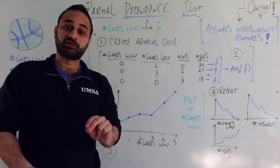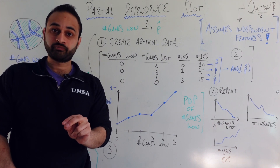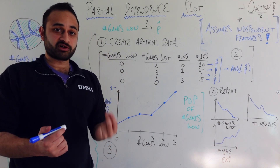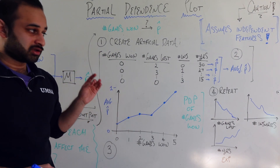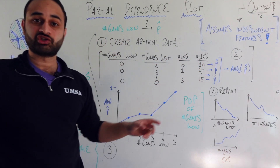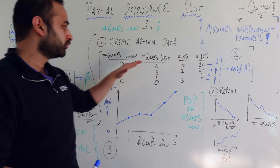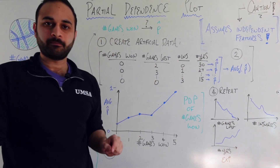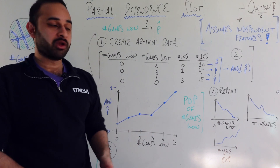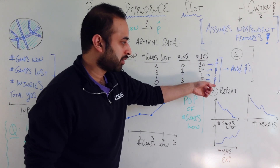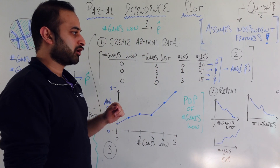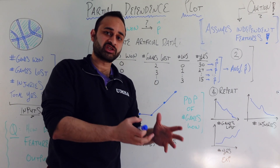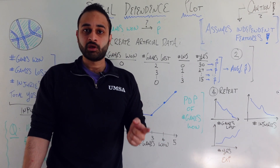Let's say the number of games won ranges between 0 and 5. We take our dataset and artificially set the entire games-won column to zero. Before we tampered with the data, there were natural values in that column — zero through five. Now, with the column set to zero, we calculate the predicted probability for each sample. The other features haven't been touched. We do this for every team in the dataset and then simply take the average of all those predicted probabilities.